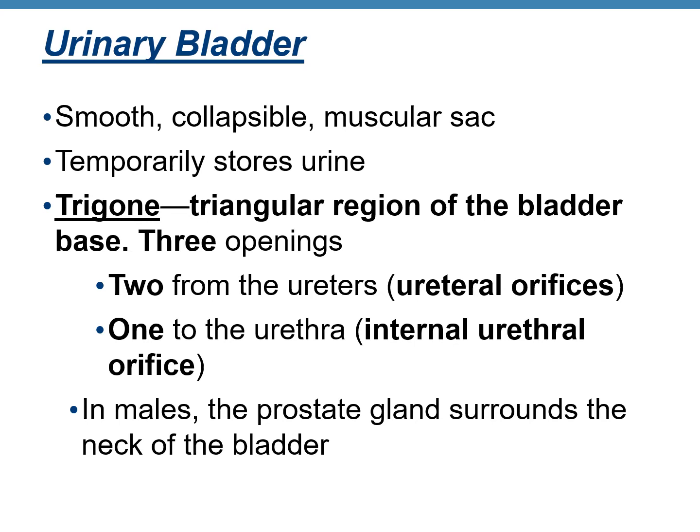The urinary bladder is a muscular sac-like structure whose main function is to temporarily store urine. It can collapse and expand. An important part of the urinary bladder is the trigone — a triangular region at the base (inferior part) formed by three openings: two ureteral orifices from the ureters and one internal urethral orifice leading to the urethra. In human males, the prostate gland surrounds the neck of the urinary bladder.